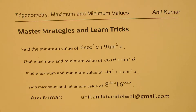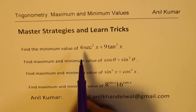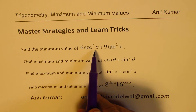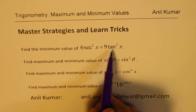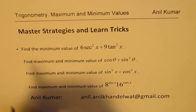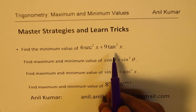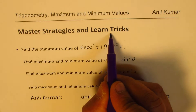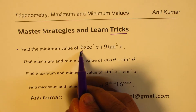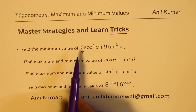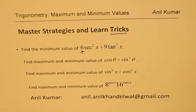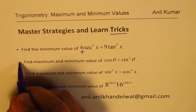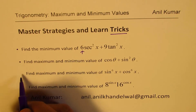First, we'll find the minimum value for 6 secant squared x plus 9 tan squared x. There's a trick involved. The answer will always be the coefficient of secant squared x as the minimum value.